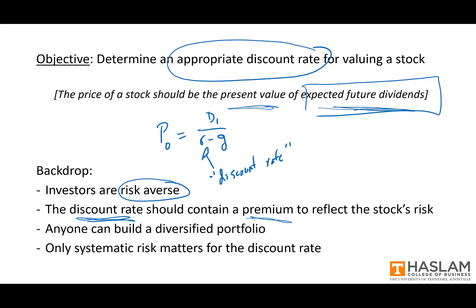The next thing to remember is that anyone can build a diversified portfolio. Individual stocks are subject to both systematic risk and idiosyncratic risk. But when you put stocks together in a portfolio, the idiosyncratic risk of each is diversified away and all you're left with is systematic risk. So when investors can easily build diversified portfolios, it's really systematic risk that matters, and when developing the discount rate we need to hone in on systematic risk.